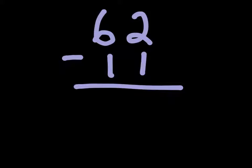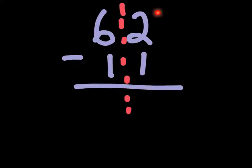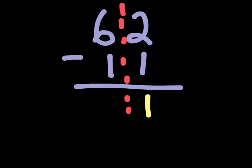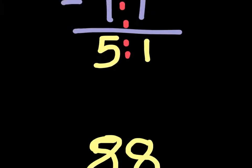Next question: 62 minus 11. We break it into left and right hand columns. Right hand column: 2 minus 1 is 1. Left hand column: 6 minus 1 is 5. So the answer to 62 minus 11 is 51.